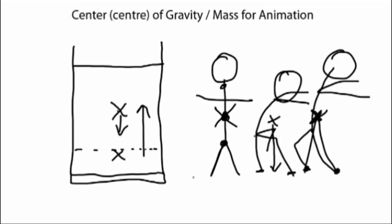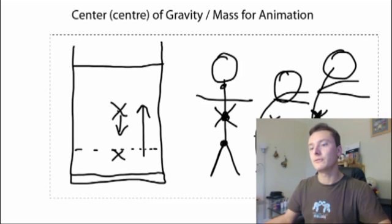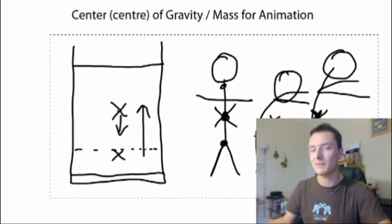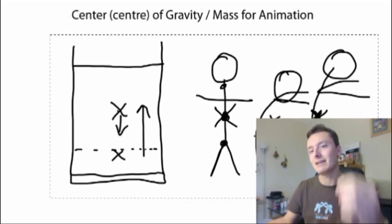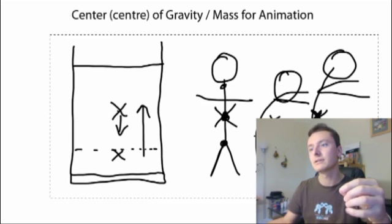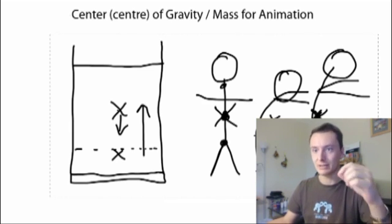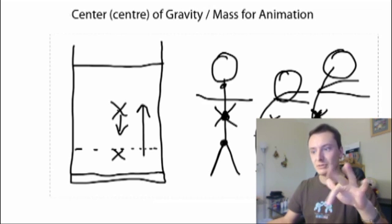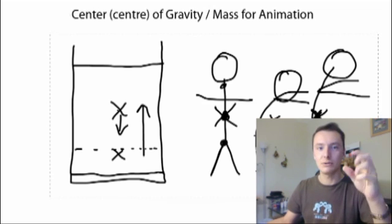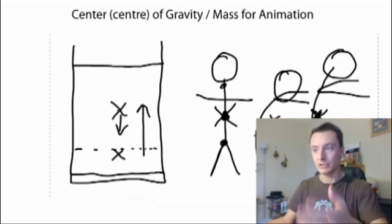The reason for this is that it's really easy for a viewer to look at something and feel like it's off balance just because everybody's inherently aware of the center of mass. We know when something looks like it's going to fall over, but we might not know specifically why it's actually wrong. We just know that it looks wrong.